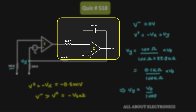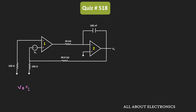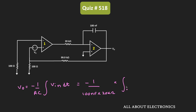Now if we see the second op-amp, that is nothing but an integrator. We know that the output of the integrator is given as minus 1 divided by RC times the integral of Vin dt. In this case, that is equal to minus 1 divided by 100 nanofarad times 20 kilo ohm, times the integral of minus Vsat dt, which equals 500 times Vsat times t.